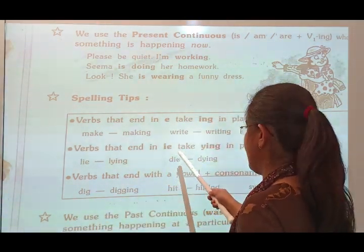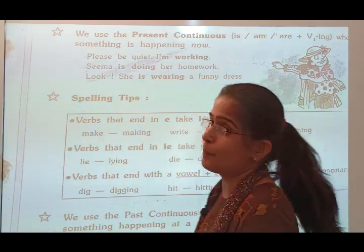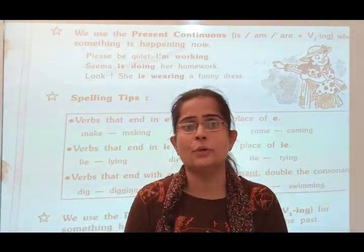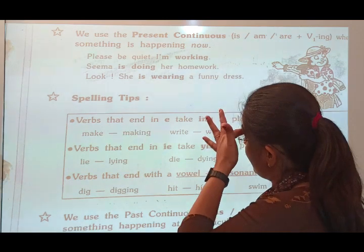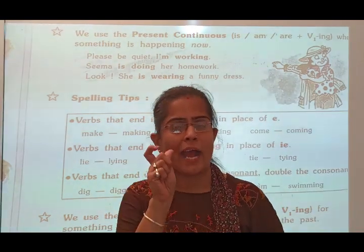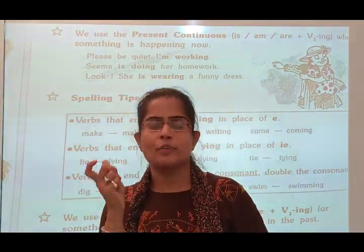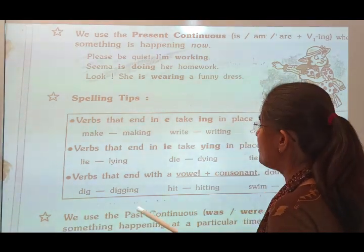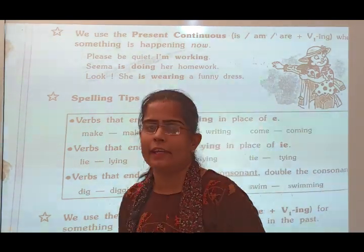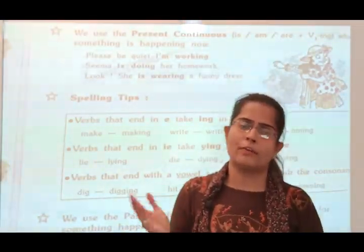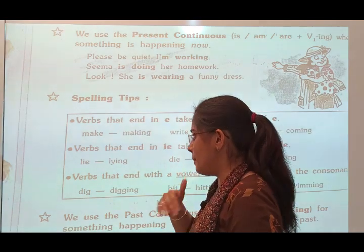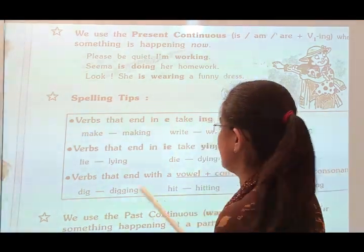Rule 2: Verbs that end in 'ie' take -ing in place of 'ie'. Suppose any verb ends with 'ie' — when I convert this verb to the -ing form, I remove 'ie' and in its place I write 'y' and then add -ing. For example, 'die' becomes 'dying'. Rule 3: Verbs that end with a vowel plus consonant — double the consonant and add -ing.